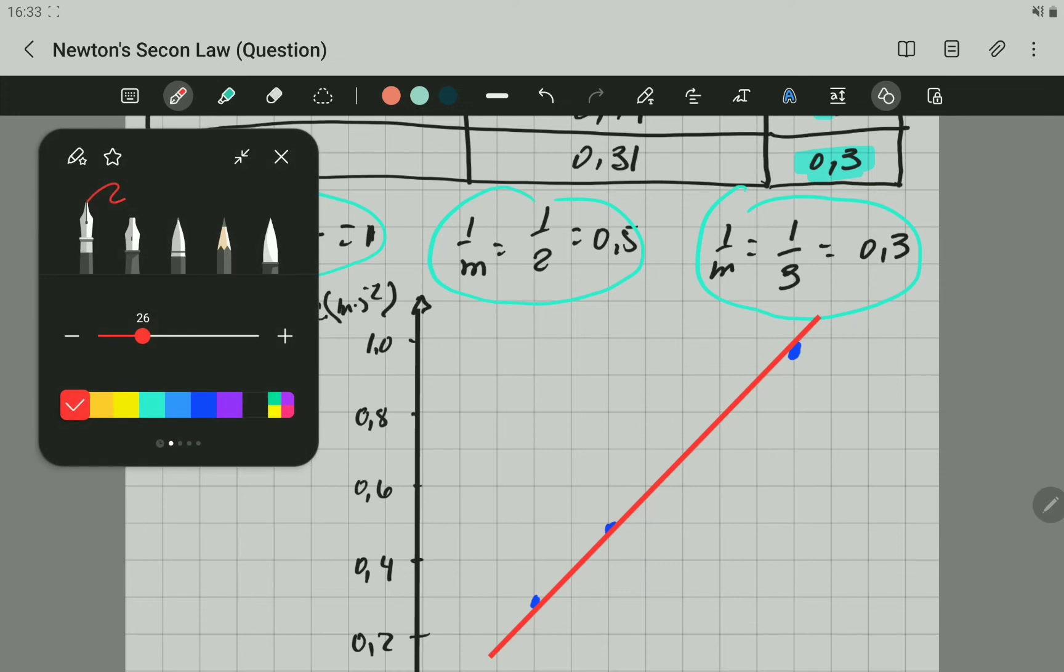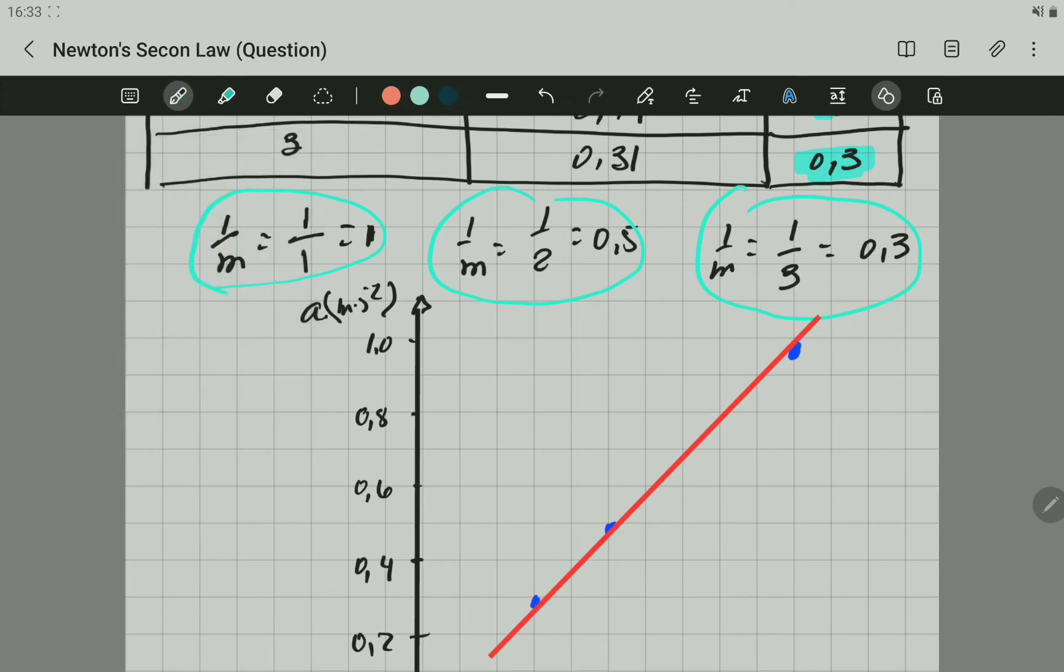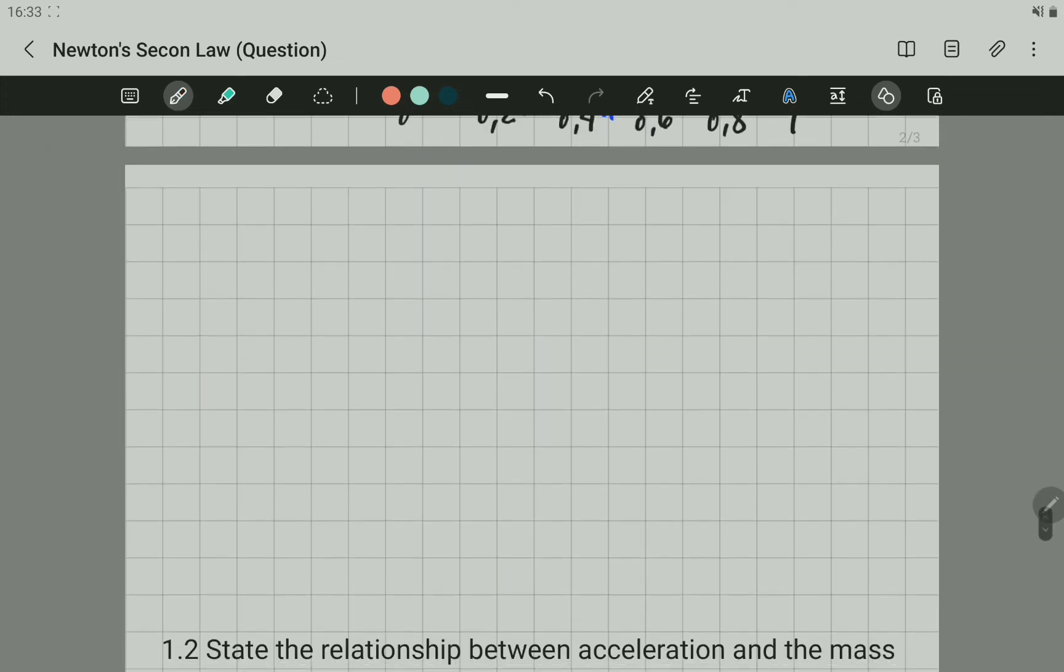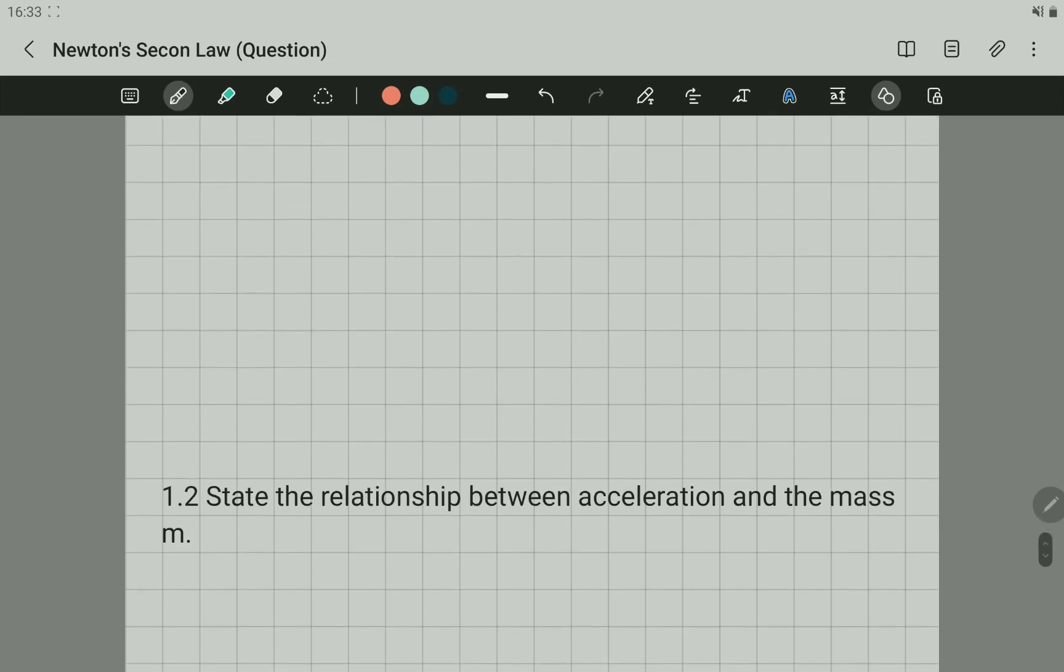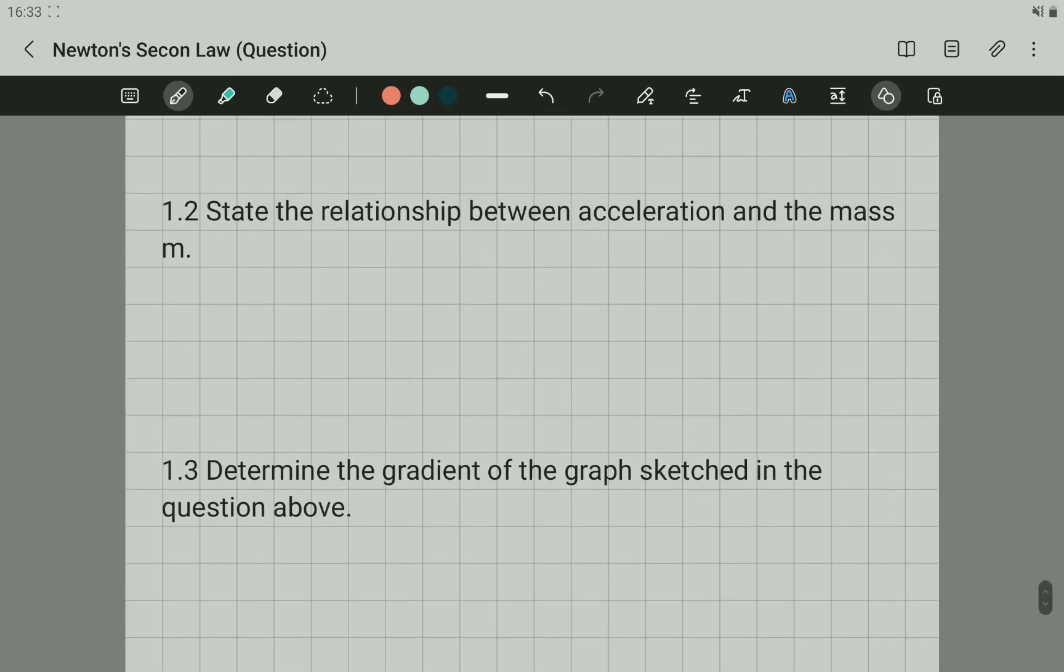Question 1.2. State the relationship between acceleration and the mass of the object. So the relationship is: the acceleration is inversely proportional to the mass of the object when F_net is constant. This is important. So this is the relationship between acceleration and mass.